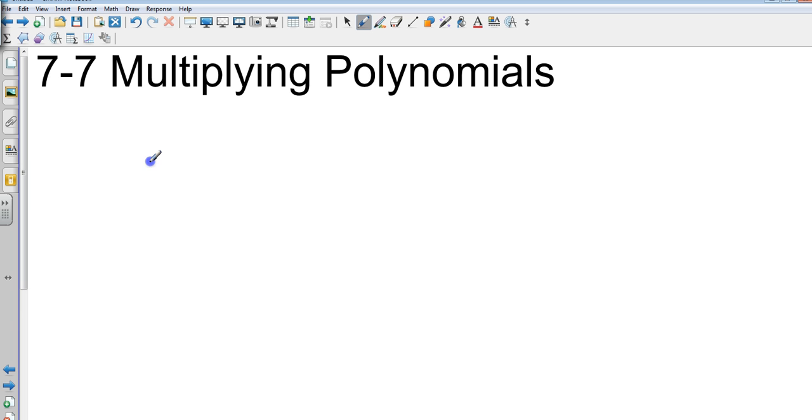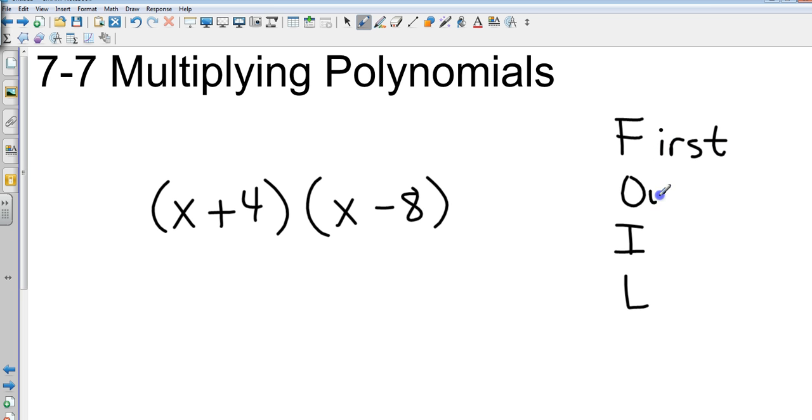To use the FOIL method, I need to have two polynomials. I'm multiplying two polynomials together, these are binomials. So I'm multiplying two binomials together and I'm going to teach you the FOIL method. And that's just like the foil you have in your house.